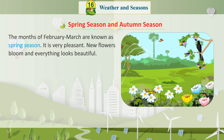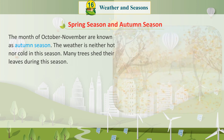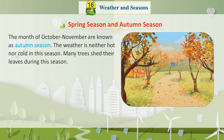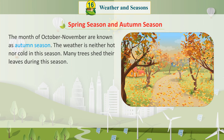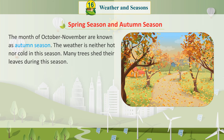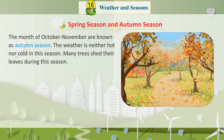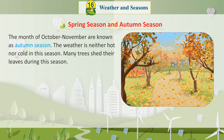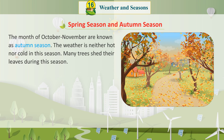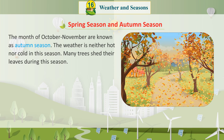New flowers bloom in spring and everything looks beautiful. The months of October and November are called autumn season. The weather is neither hot nor cold in autumn, and many trees shed their leaves during this season.